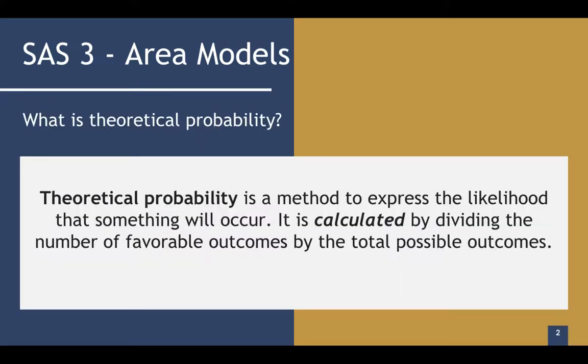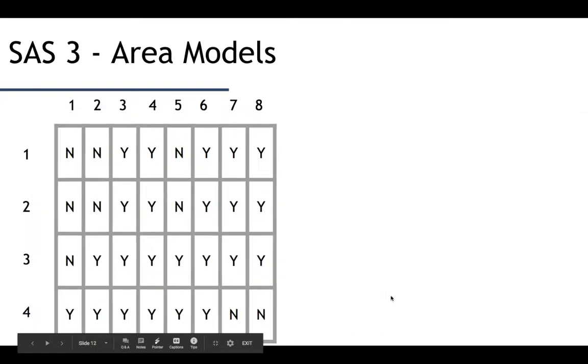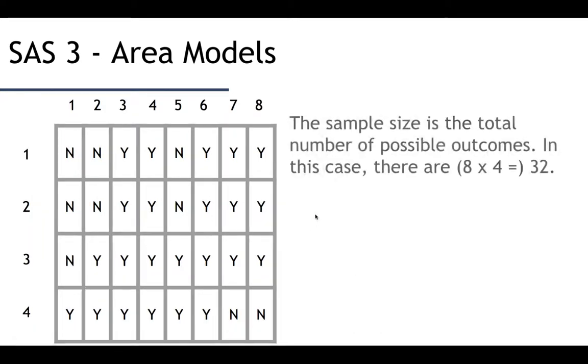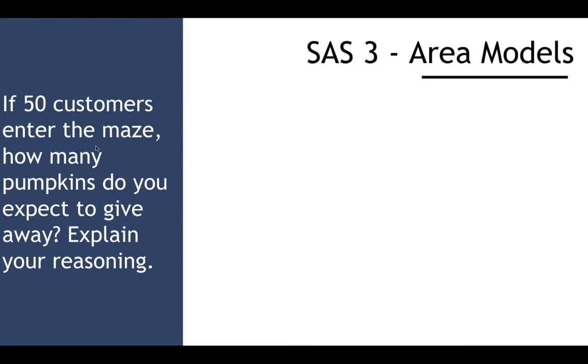What is theoretical probability? It is defined as a method to express the likelihood that something will occur. It is calculated by dividing the number of favorable outcomes by the total possible outcomes. That's what we've been doing the last couple days with probability. This area model is the same as this area model. We've taken these sections that are bigger than these smaller sections and separated them into the size of this one. The probability for pumpkin, we add the Y's and it's 23 out of 32. No pumpkin is 9 out of 32.